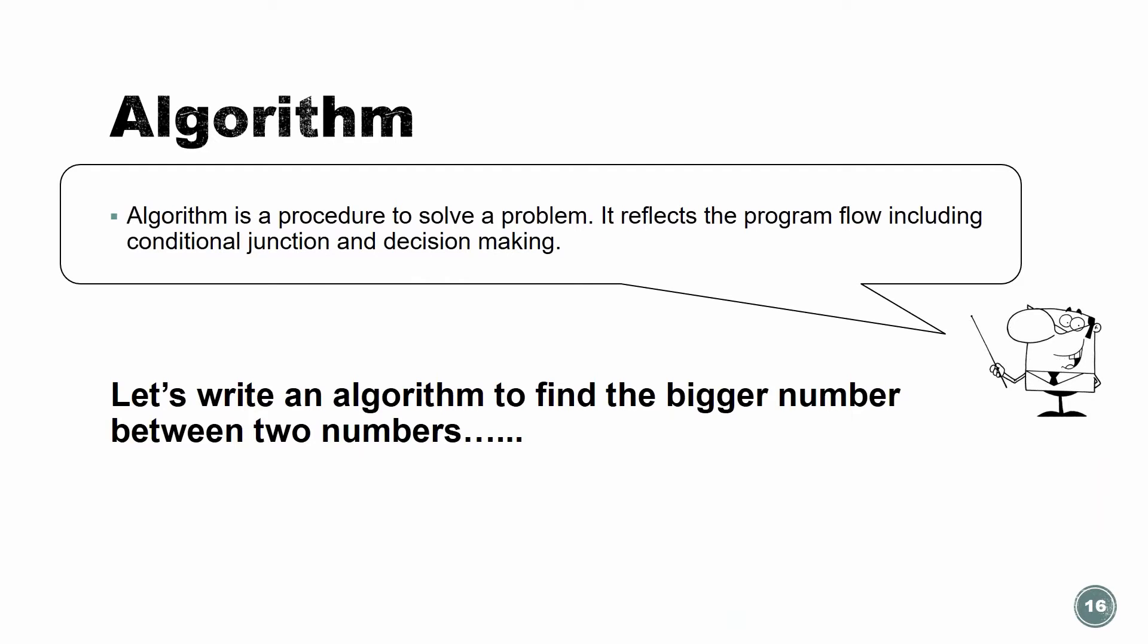Algorithm. What is algorithm? Algorithm is the procedure to solve our problem. It reflects the program flow including conditional junctions and decision making.